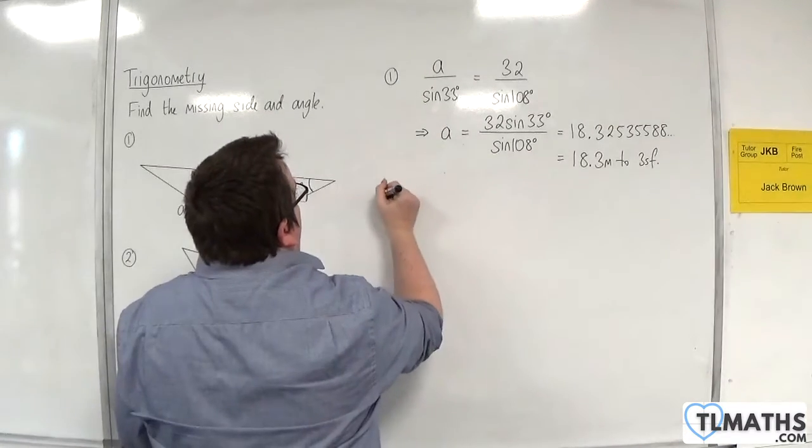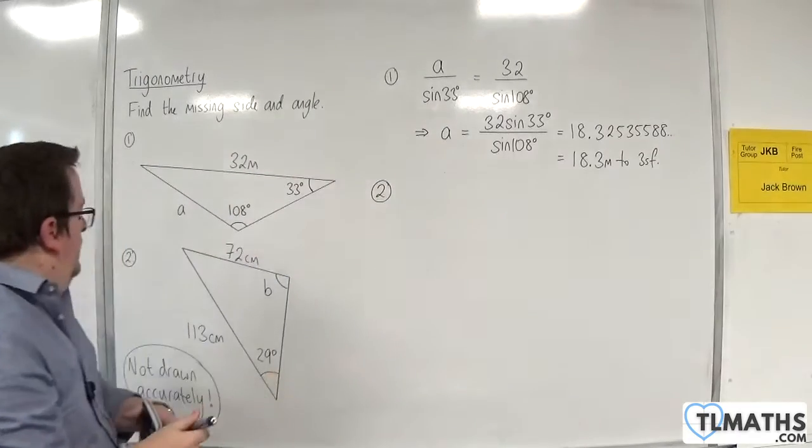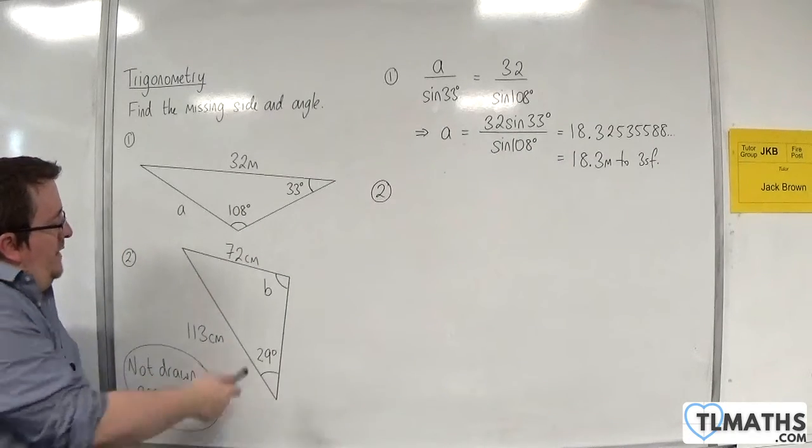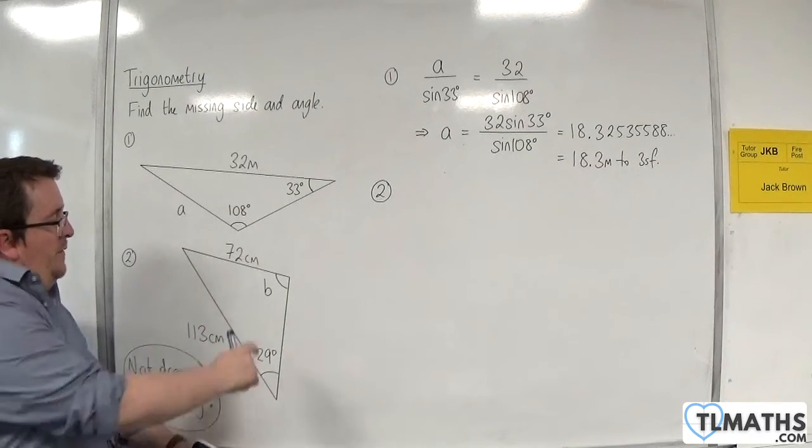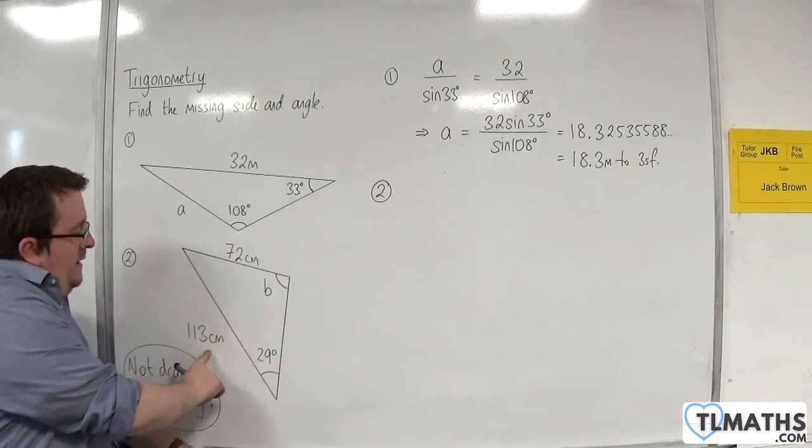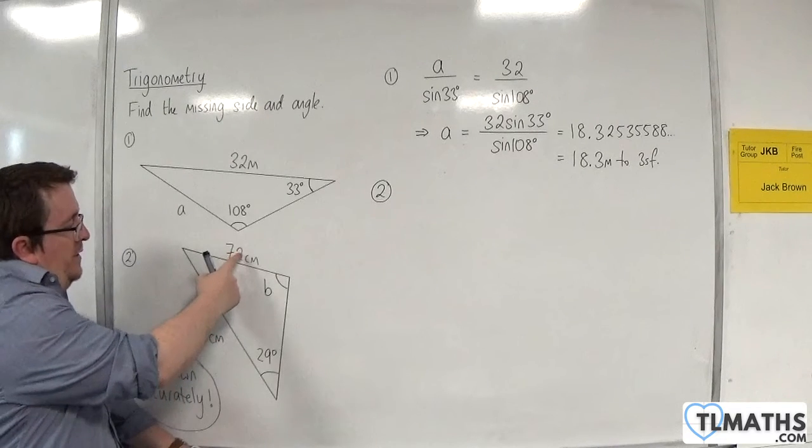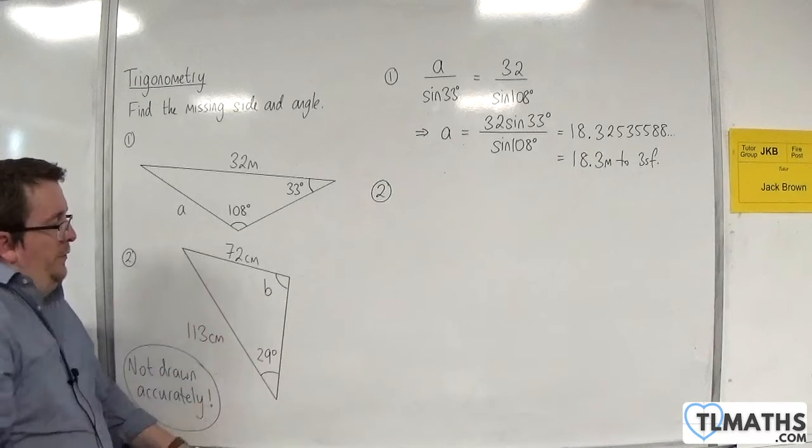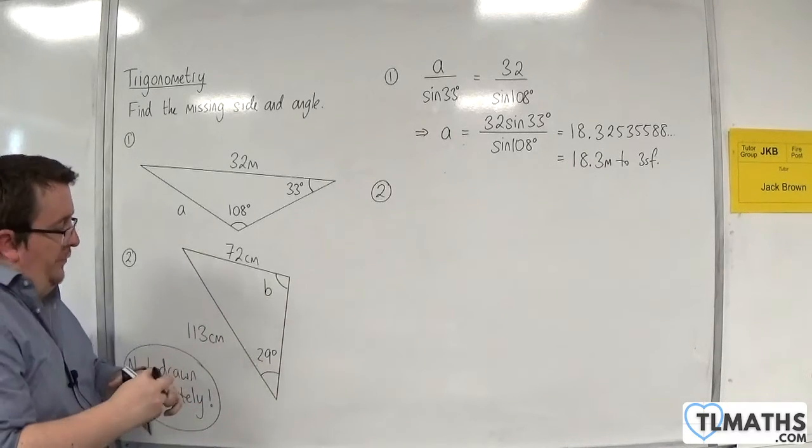For number two, we need to find the angle b. We've got the angle b and its opposite side, 113 centimeters, and we've also got an opposite side with its angle. So we should be able to use the sine rule again.